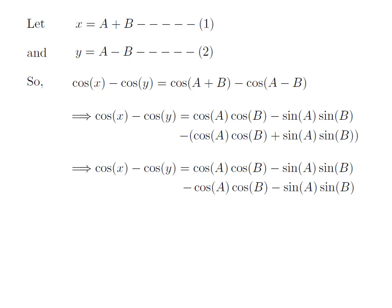Here I have removed the brackets. So, minus into plus is minus. We got cosine of x minus cosine of y is equal to cosine a cosine b minus cosine a cosine b minus sine a sine b minus sine a sine b. Subtracting and adding the common terms in the above expression, we got cosine of x minus cosine of y is equal to minus two times sine of a into sine of b. Let us give number 3 to this expression.